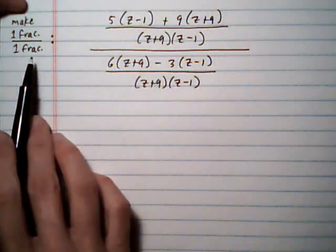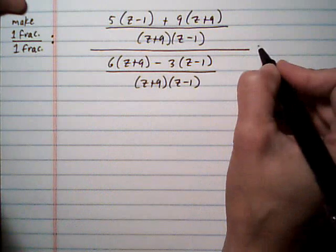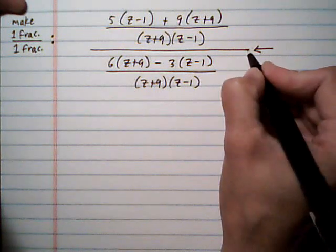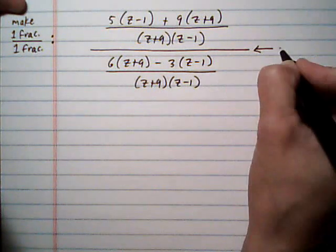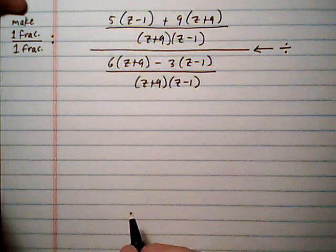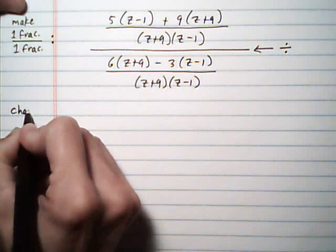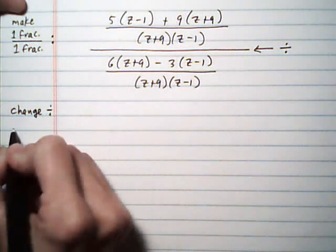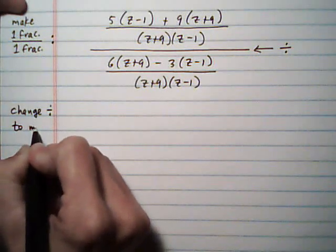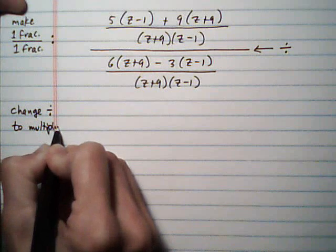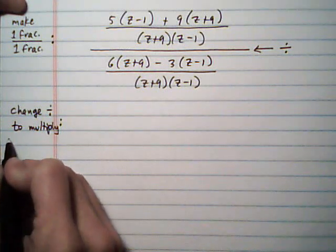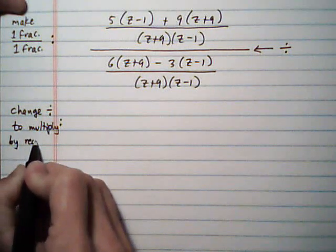All right, so now we have one fraction over one fraction. So as soon as we do that, we're going to use the idea that the fraction bar really means that we're dividing the two fractions. We're doing the top divided by the bottom, so we're going to change division to multiply, and we just have to remember that we need to multiply by reciprocal of the bottom.